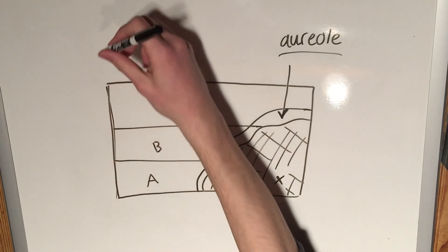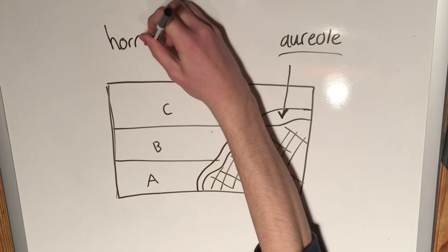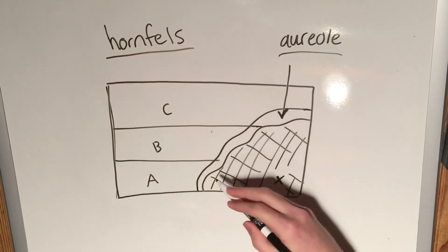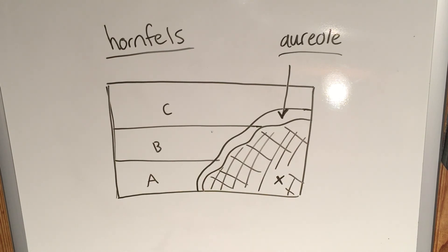A rock that is frequently formed when mudstones are baked in these regions is hornfels. Bit of a fun fact there.